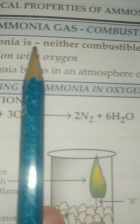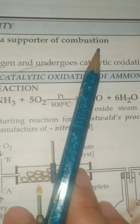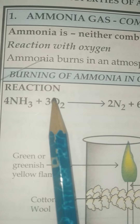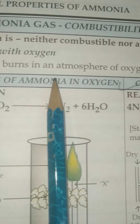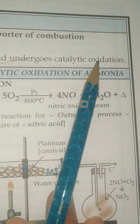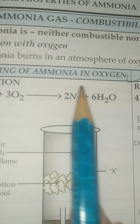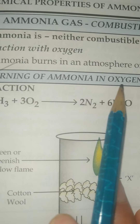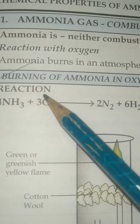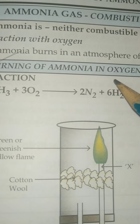Ammonia is neither combustible nor a supporter of combustion. When ammonia burns in an atmosphere of oxygen it will undergo catalytic oxidation. When ammonia reacts with oxygen it will give nitrogen and water.